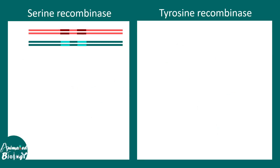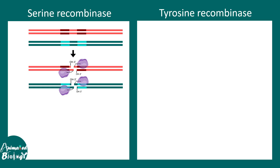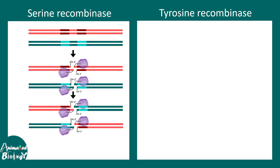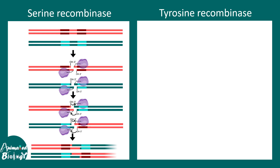Let's use block diagrams to understand this better. Serine recombinases lead to the formation of DNA breaks, forming a phosphate-DNA hybrid with one strand. Eventually these strands get passed and ultimately resealed to form the overall integrated sequence. Here you can see the recombination is complete.